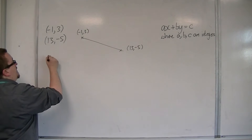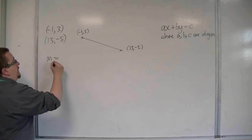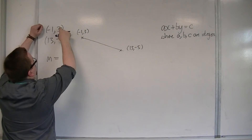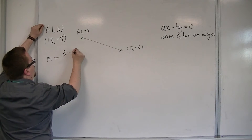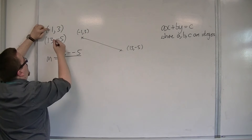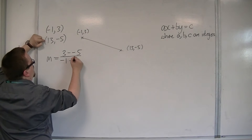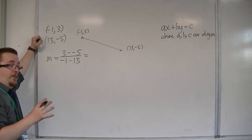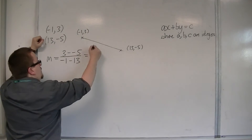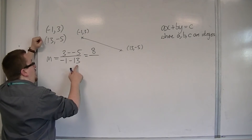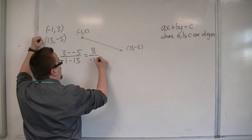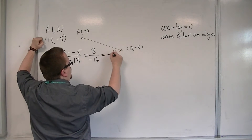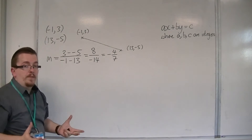We want to work out what that gradient is first. So m is the difference in the y coordinates, so 3 take away minus 5, divided by minus 1 take away 13. So 3 take away minus 5 is 8. Minus 1 take away 13 is minus 14. So that could be simplified to minus 4 over 7, so minus 4 sevenths.